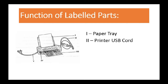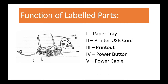The printer USB cord is used for connecting your printer to the computer so that your printer can receive data or information from the computer. The printout is the paper that has been printed upon by your printer, ready to be used by the computer user. The power button helps you to power on and power off your printer. The power cable helps you to connect your printer to an AC outlet.